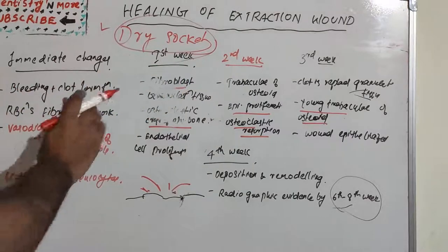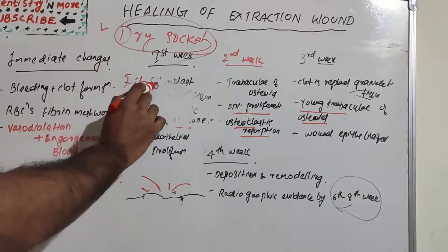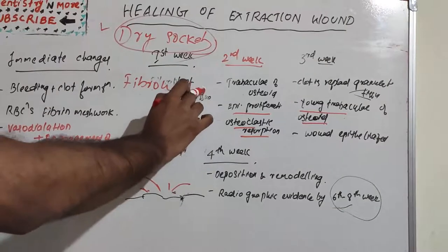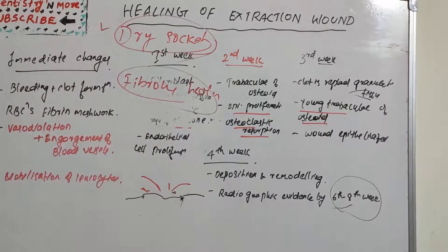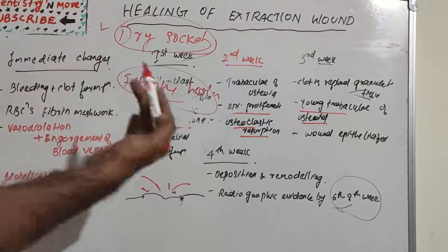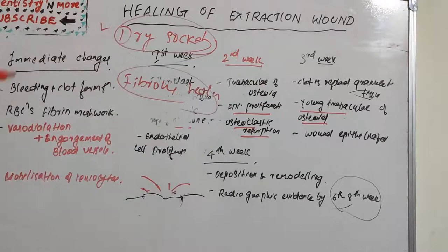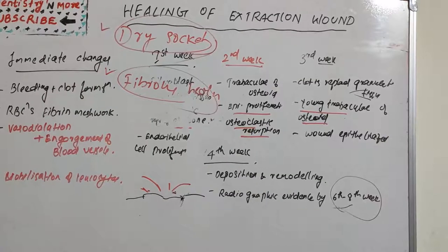Another complication is fibrous healing. When there is a difficult or complicated extraction, it creates loss of both lingual and buccal or labial plates of bone along with lots of periosteum. This leads to fibrous healing because the normal supply of leukocytes and other inflammatory cells is missing, resulting in fibrous tissue formation instead of normal healing.